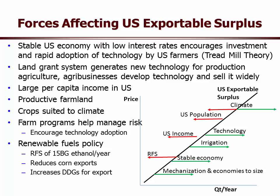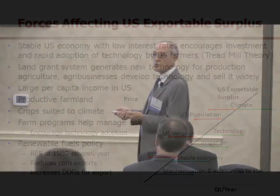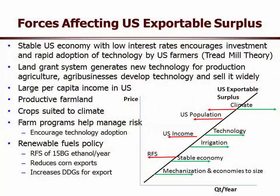Our land-grant system helps with new technology in many forms — mechanical as well as crop and livestock. We have a large per capita income in the US giving us stable domestic demand. Our population has been growing at about 1% a year, we have very productive lands, and crops suited to our climates. Farm programs help manage risk and encourage technology adoption. Our renewable fuels policy mandating 15 billion gallons of ethanol a year has reduced our corn exports, but it has increased the DDGs we export — we produce 17.9 pounds of DDGs for every bushel of corn.